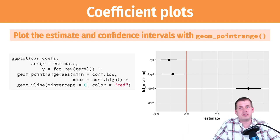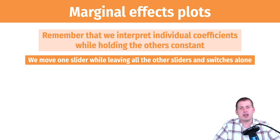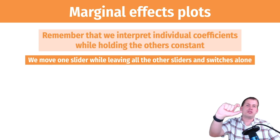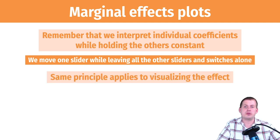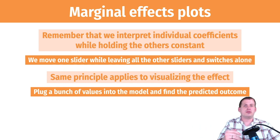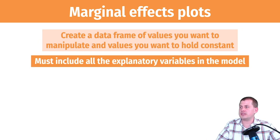Another way to look at multiple regression model effects is a marginal effects plot. This goes back to the sliders and switches analogy: when interpreting individual coefficients we leave all others constant. We set the cylinders slider to the average number of cylinders, then manipulate one other variable. The same principle applies to visualization: we create a new dataset, plug in a range of values from that dataset into our model to get predicted miles per gallon, and then plot those.